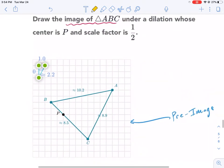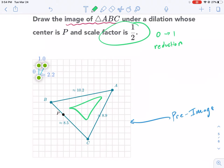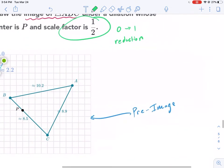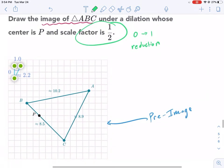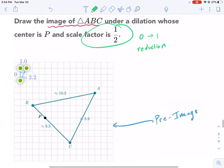And then it says scale factor one half. This is vital information. If the scale factor is between zero and one, that means it is a reduction - we should have a smaller shape. If it was bigger than one, say two or five, then we're looking at an enlargement. But in this case, it is one half, so it is a reduction.